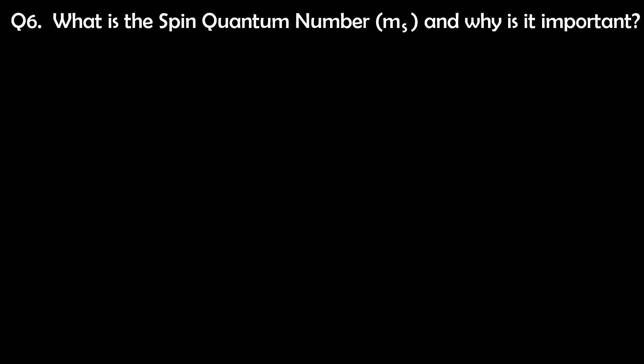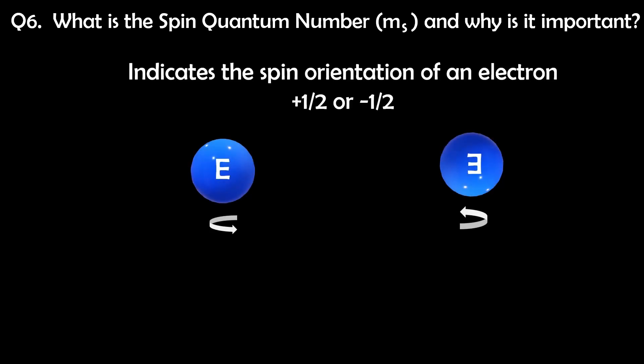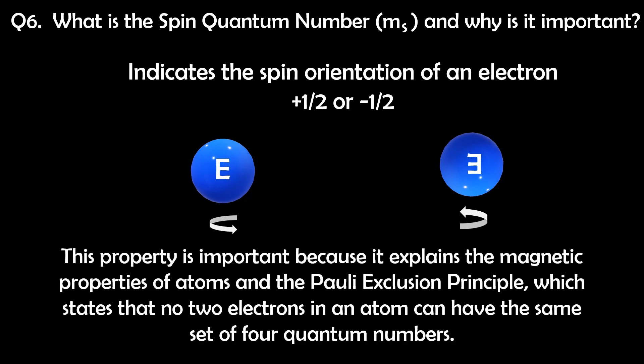Question 6. What is the spin quantum number M sub S and why is it important? The spin quantum number indicates the spin orientation of an electron, which can either be positive half or negative half. This property is important because it explains the magnetic properties of atoms and the Pauli exclusion principle, which states that no two electrons in an atom can have the same set of four quantum numbers.